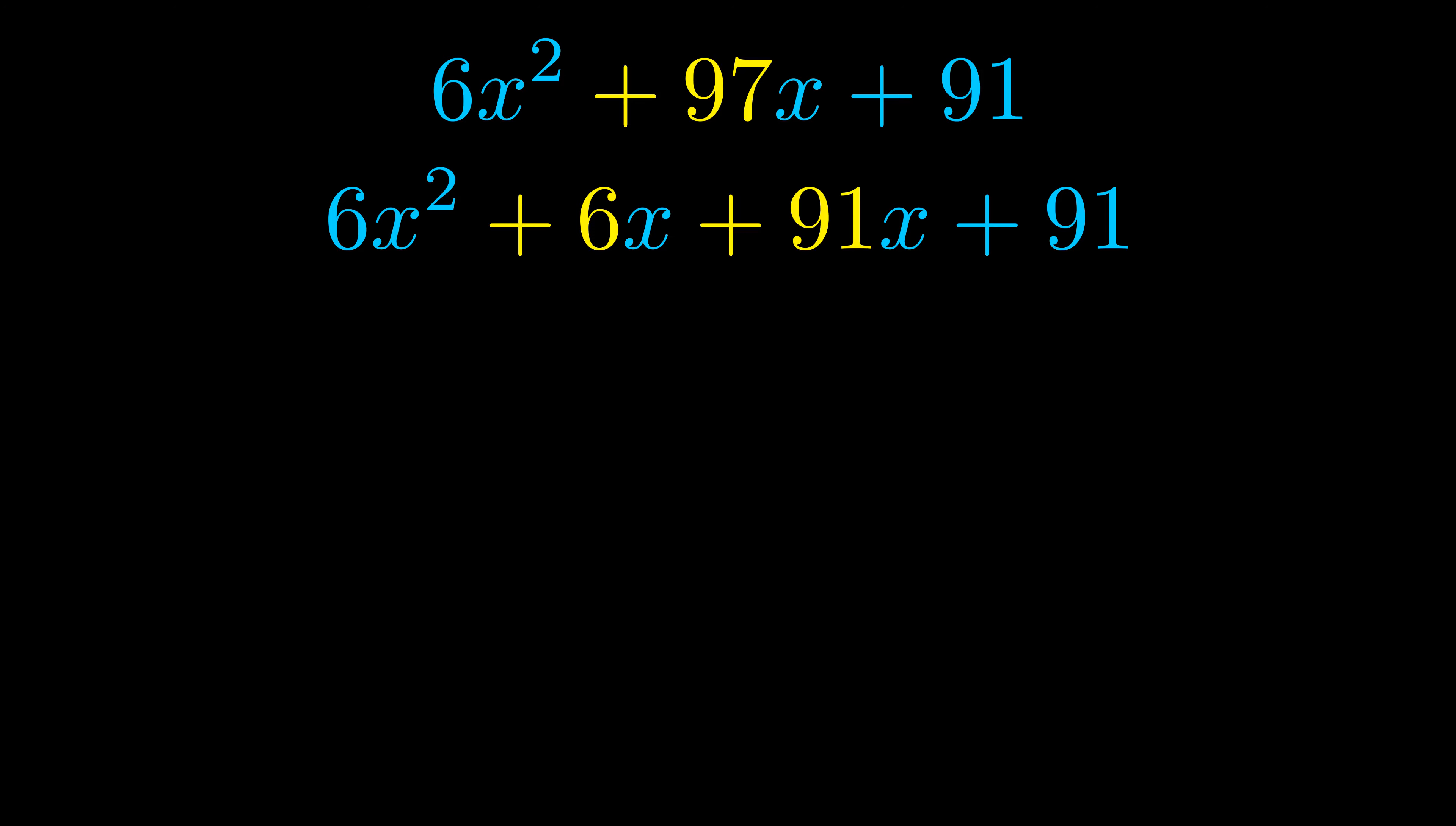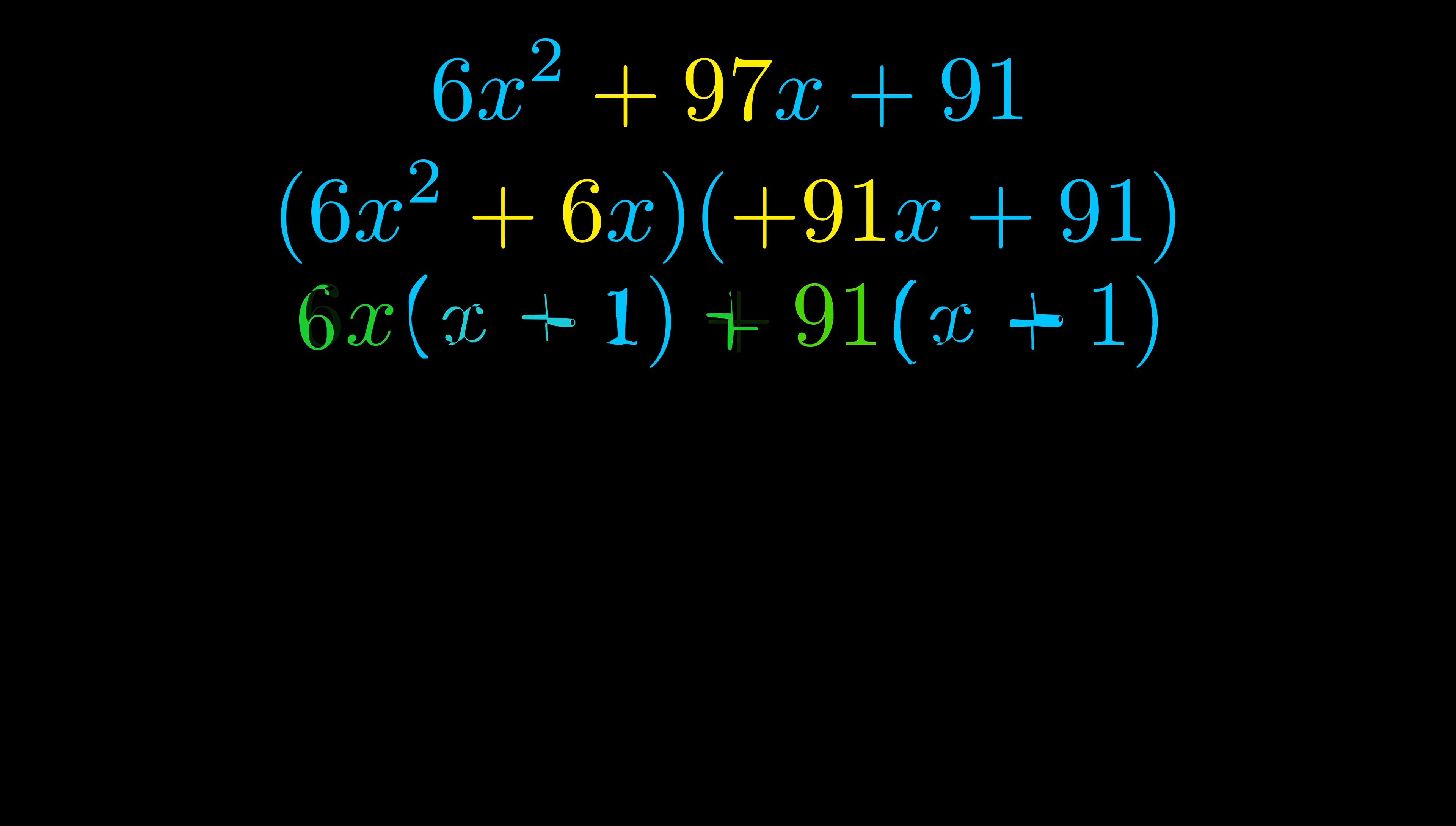Once we've done this we go ahead and we put parentheses around the first term and the last term and we do that so that we can take the greatest common factor out of both terms. We can see the greatest common factor is now outside in green.